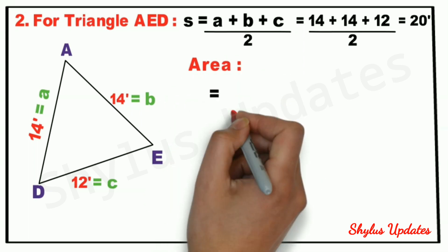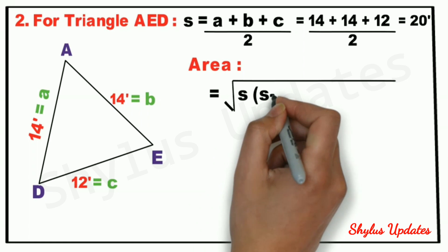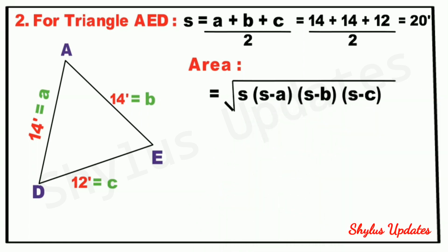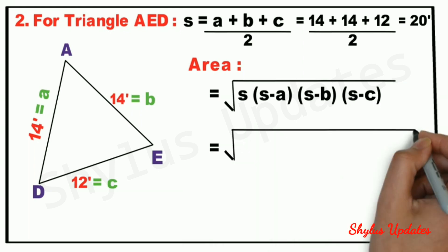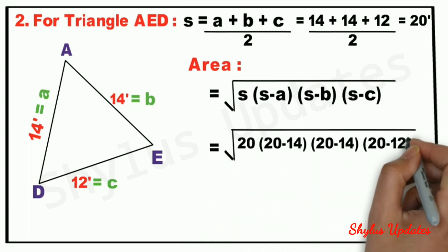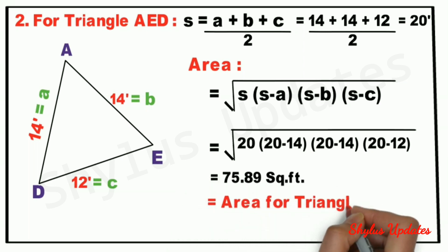Here also, we calculate area using the formula: root of s into s minus a into s minus b into s minus c. When we substitute the values, we get 75.89 square feet. This is the area for triangle AED.